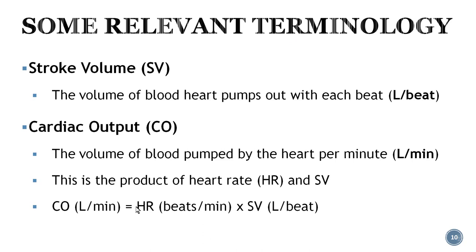Some relevant terminology: stroke volume is the volume of blood the heart pumps out with each beat, expressed as liters per beat. Cardiac output is the volume of blood pumped by the heart per minute, expressed as liters per minute. When you do the math — heart rate times stroke volume — you get liters per minute, which is the cardiac output.